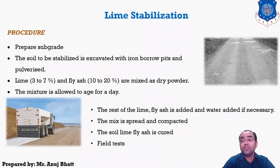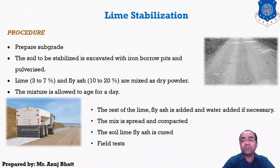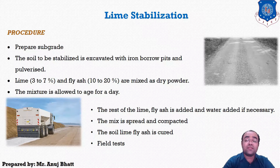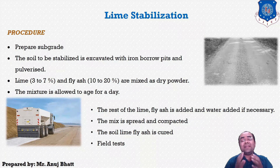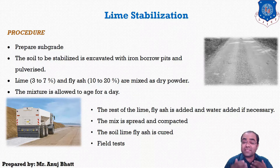For lime stabilization, we can use two to ten percent of lime in the soil mass. Lime stabilization is suitable only for clayey soil — it decreases swelling potential and swelling pressure in clayey soil, particularly black cotton soil. Adding lime to the soil produces maximum dry density under higher optimum moisture content than in untreated soil.